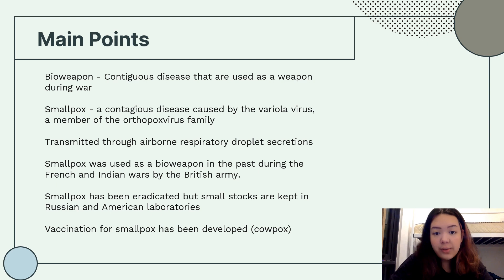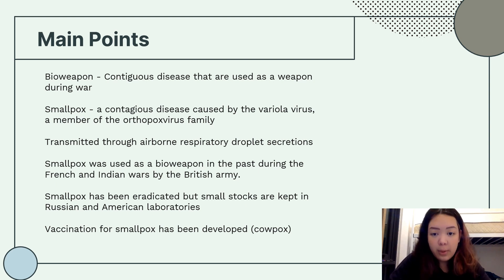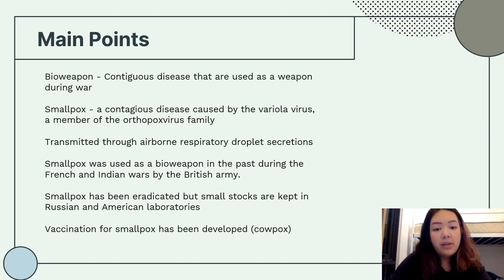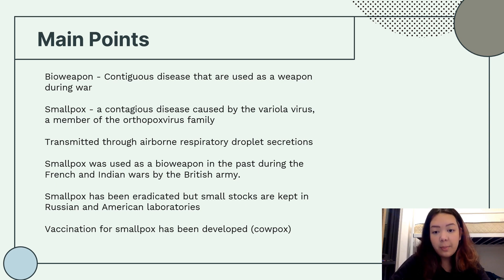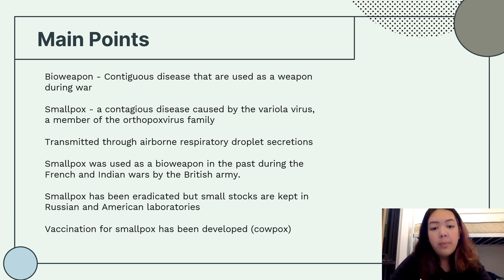To recap: a bioweapon is a contagious disease agent used as a weapon. It is mostly used during war, but can also be used for political assassination, infection of agricultural produce to cause shortages and economic loss. Smallpox can be used as a bioweapon — it is a contagious disease caused by the variola virus, a member of the orthopoxvirus family.